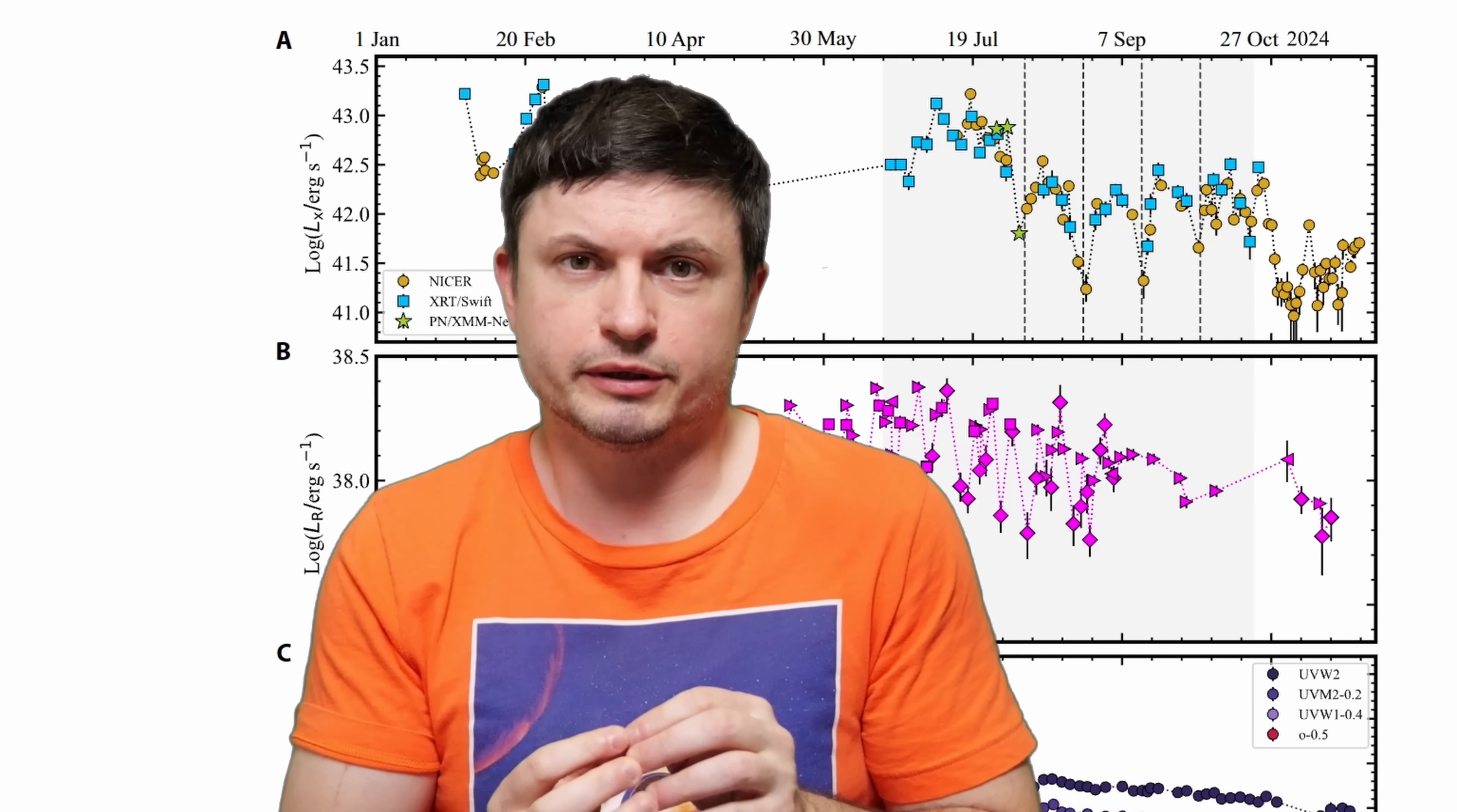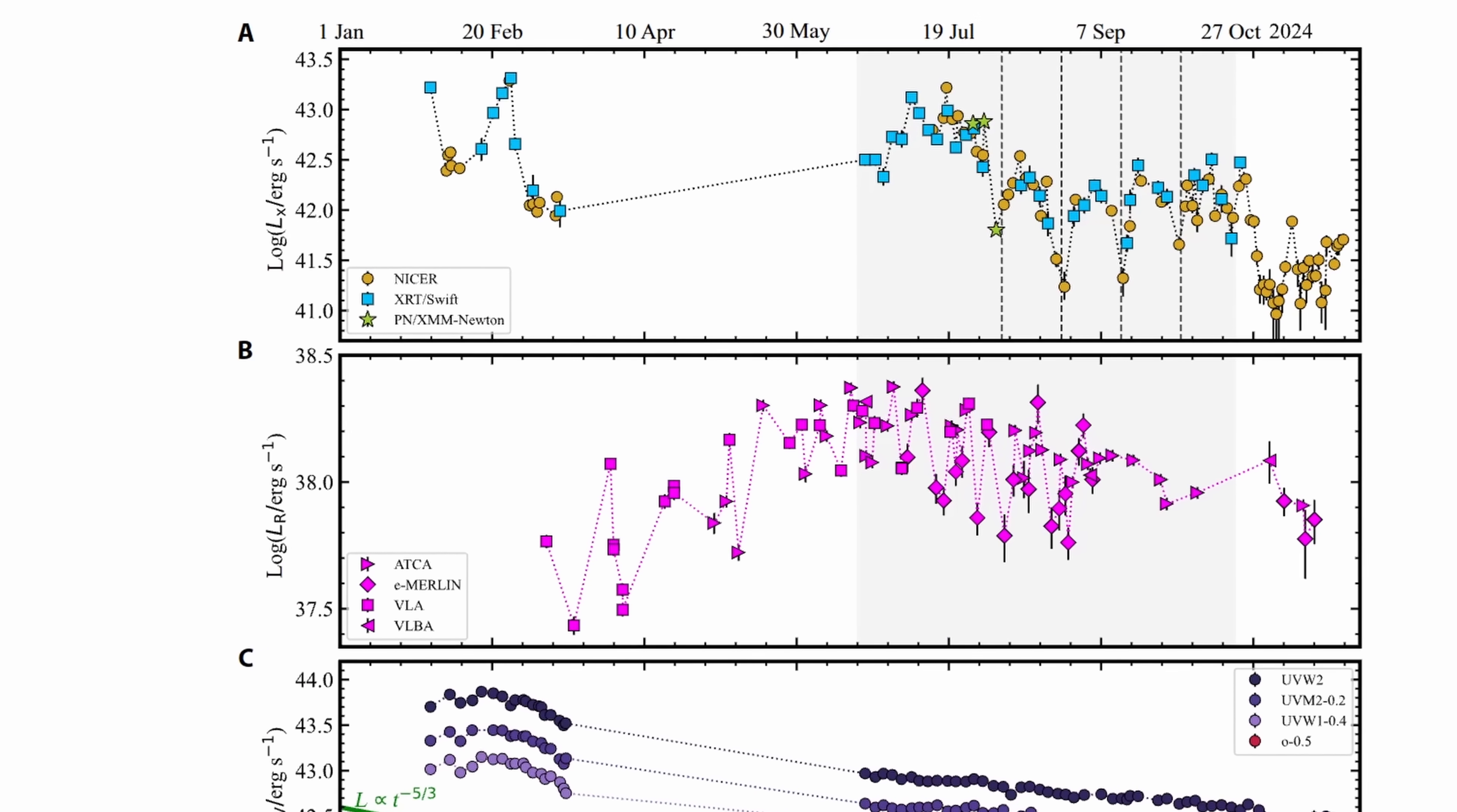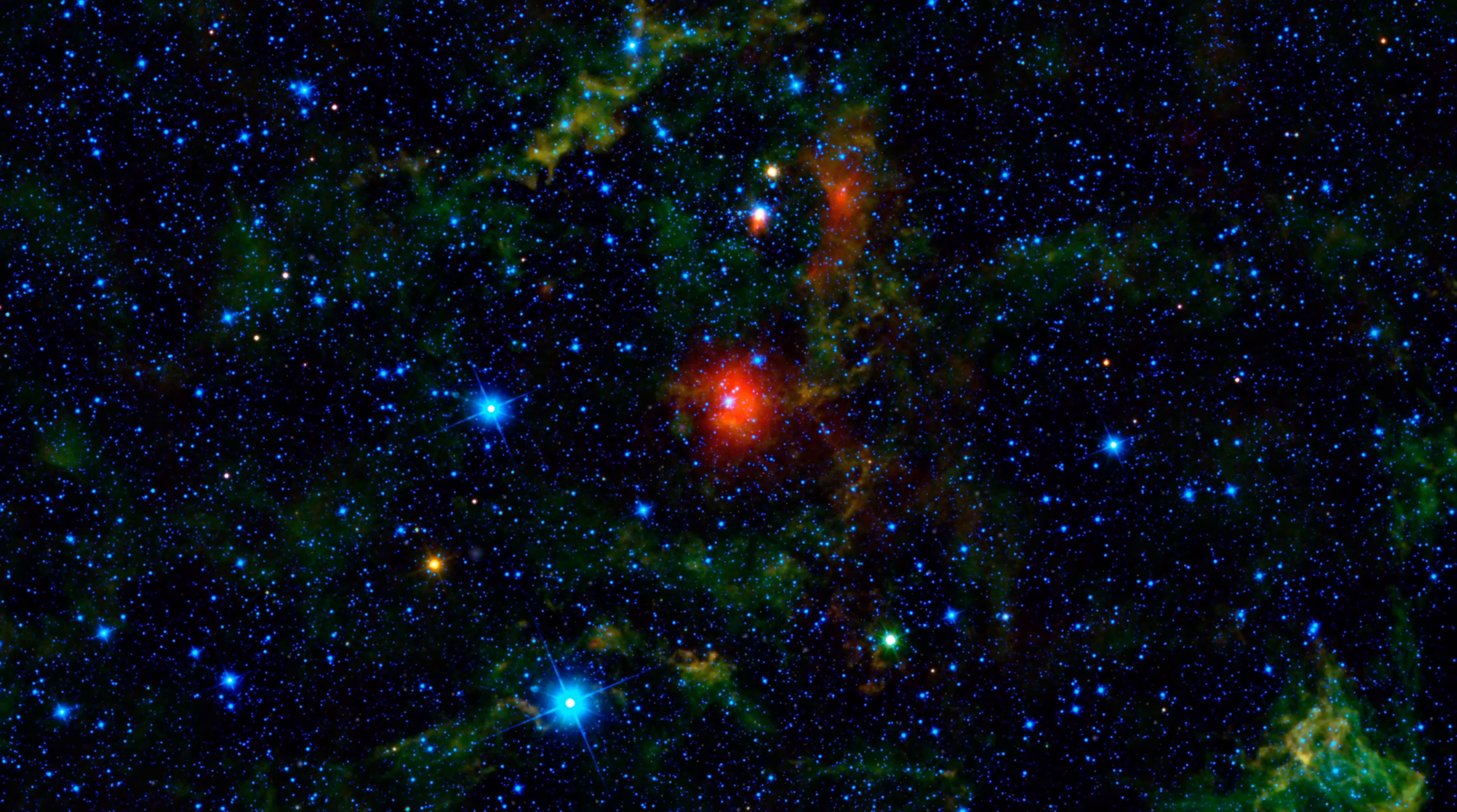And then, by using additional telescopes, such as the Swift Observatory and the Very Large Array, researchers observed X-rays and radio signals, and discovered something unusual and something that was actually never seen before. They observed a very bizarre 20-day-long wobble.